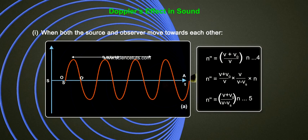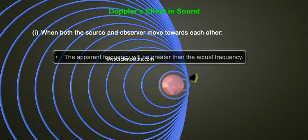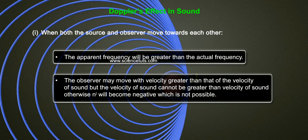This gives n'' = ((v + v₀) / (v - vs)) × n — Equation 5. This equation shows that the apparent frequency will be greater than the actual frequency. The observer may move with velocity greater than the velocity of sound, but the velocity of the source vs cannot be greater than the velocity of sound v; otherwise n' would become negative, which is not possible.